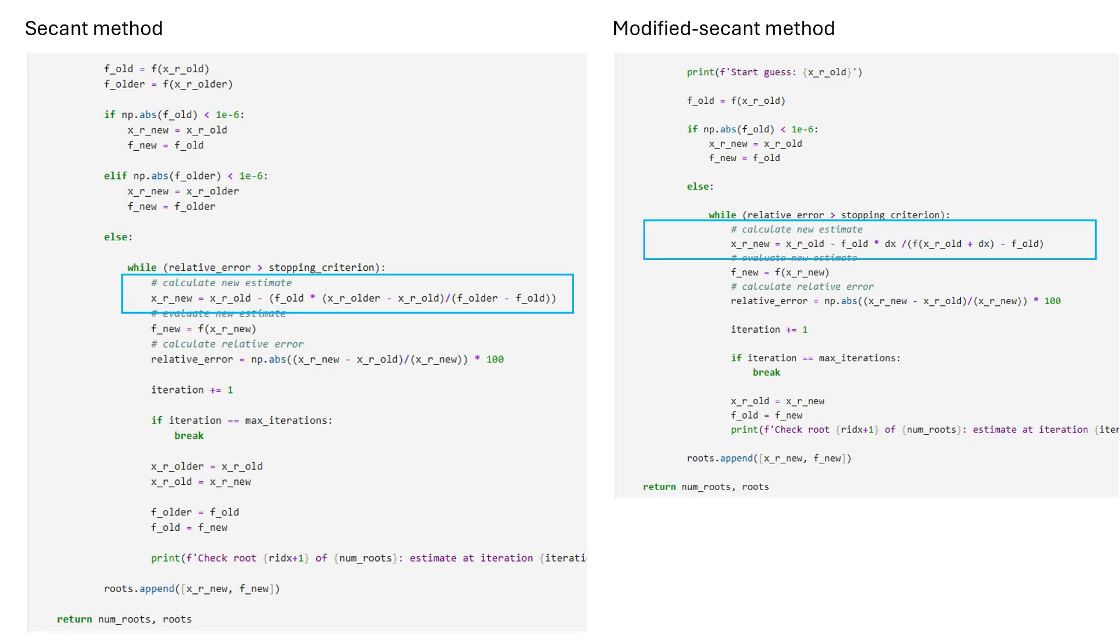This is how the main while block looks in secant and modified secant method. If you have seen the previous videos, you might have noticed that code structure remains almost the same for all methods.